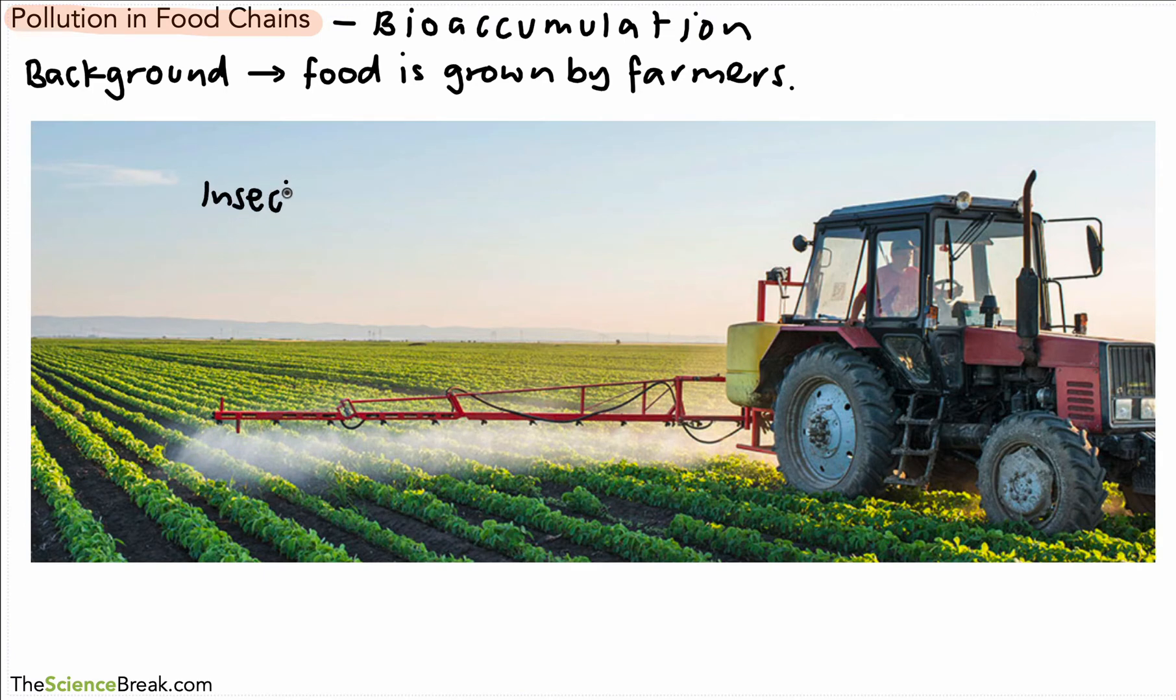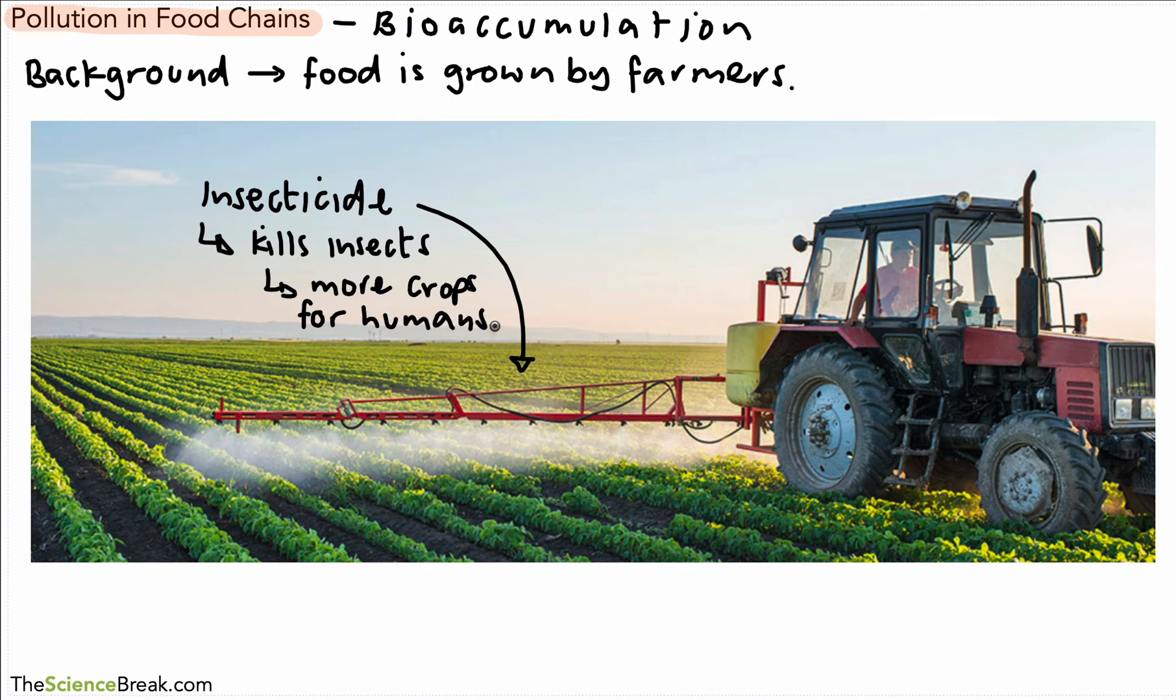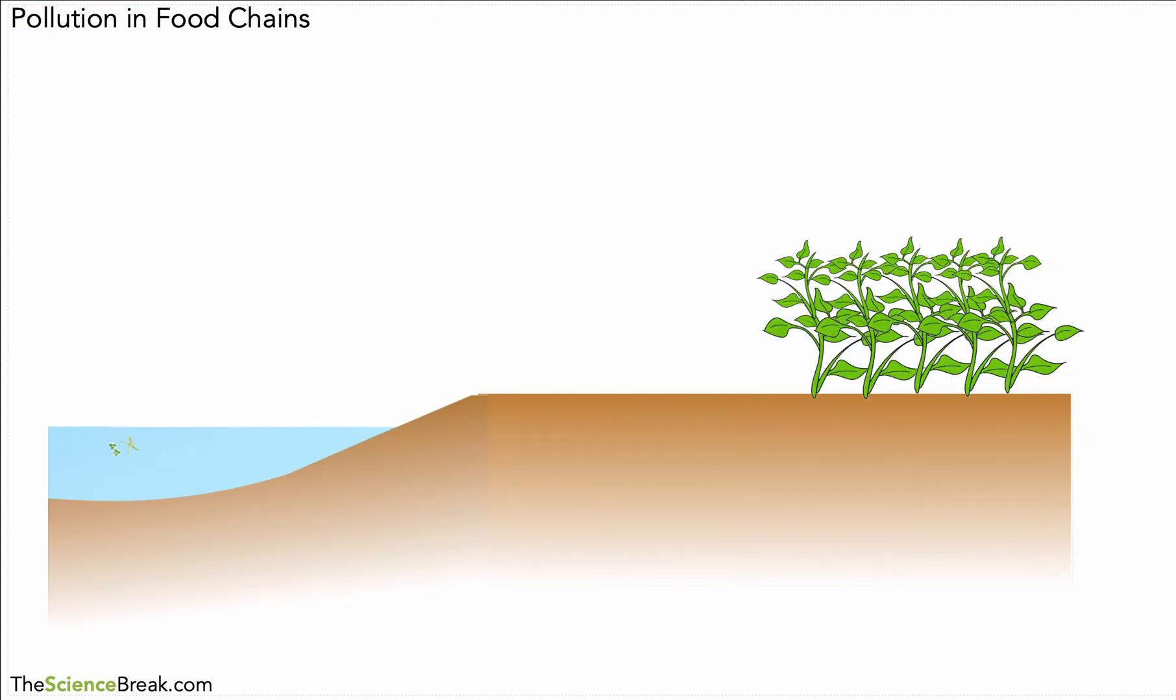What is going on here is that some insecticide is being sprayed on the crops. Insecticide kills insects or kills certain types of insects and that means if we kill those insects that eat that crop, there's going to be more crops for humans. We say there is a higher crop yield. So linking that with our topic of bioaccumulation and pollution in food chains, let's see what is going on.